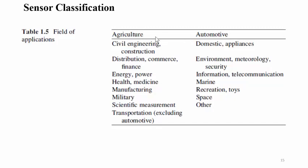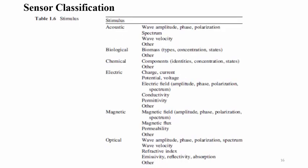In the application-based table, sensors are classified across categories including agricultural, automotive, civil engineering and construction, distribution, commerce and finance, renewable energy and power, health and medicine, manufacturing, chemical industries, scientific measurement, domestic and home appliances, environmental and metrological applications, information transmission and reception, wireless and telecommunication, marine applications, and toys.